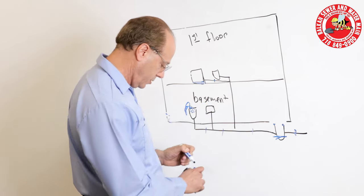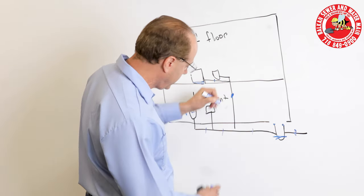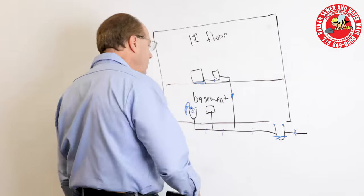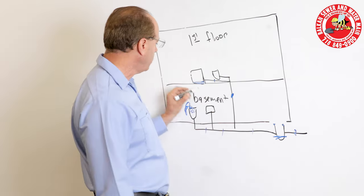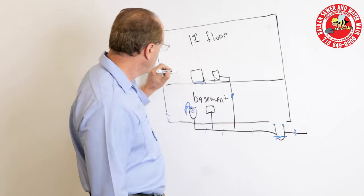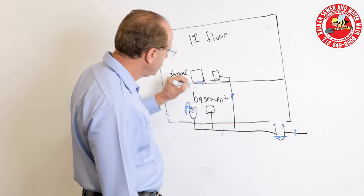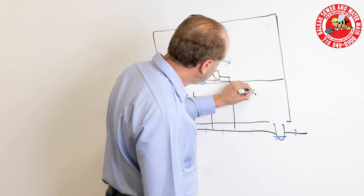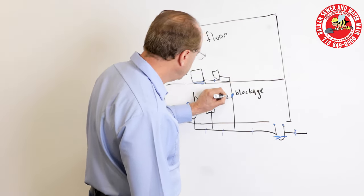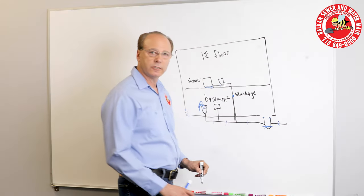Well, this is called a stack. You can have a blockage in the stack. And again, that could be blocking all the water draining from the first floor, but where will it come out? The lowest point at your shower, if you have a blockage in the stack. This is your stack that goes down to your house drain.